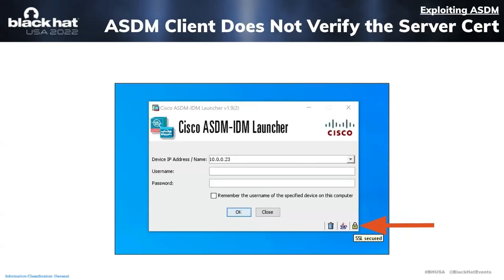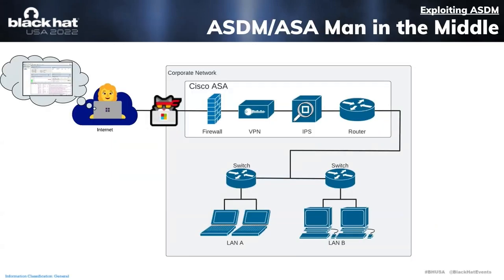What's interesting is that while that communication occurs over SSL, the ASDM client never verifies the ASA's server certificate. This means a man-in-the-middle, like HackerCat here, can monitor or even modify the communication between the ASDM client and the ASA itself. Essentially, this should allow HackerCat to take full control over the ASA as long as they're able to establish this man-in-the-middle position.